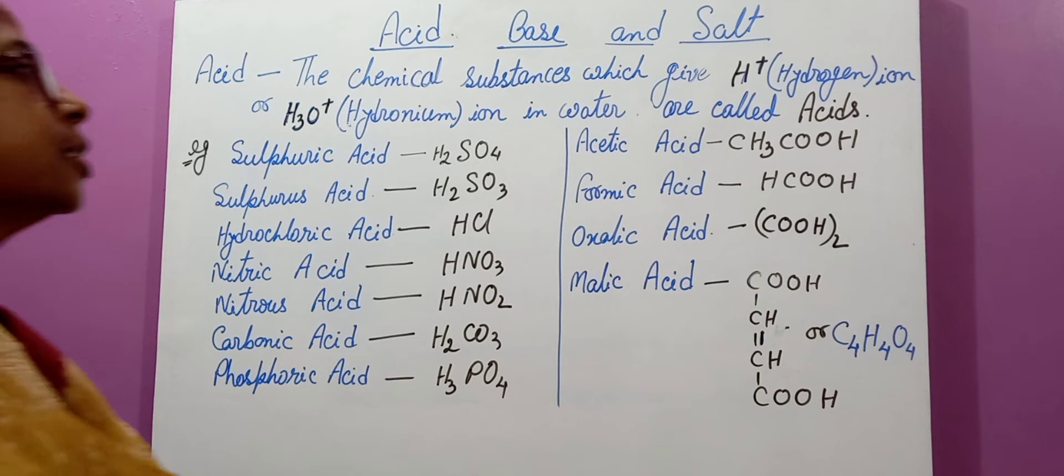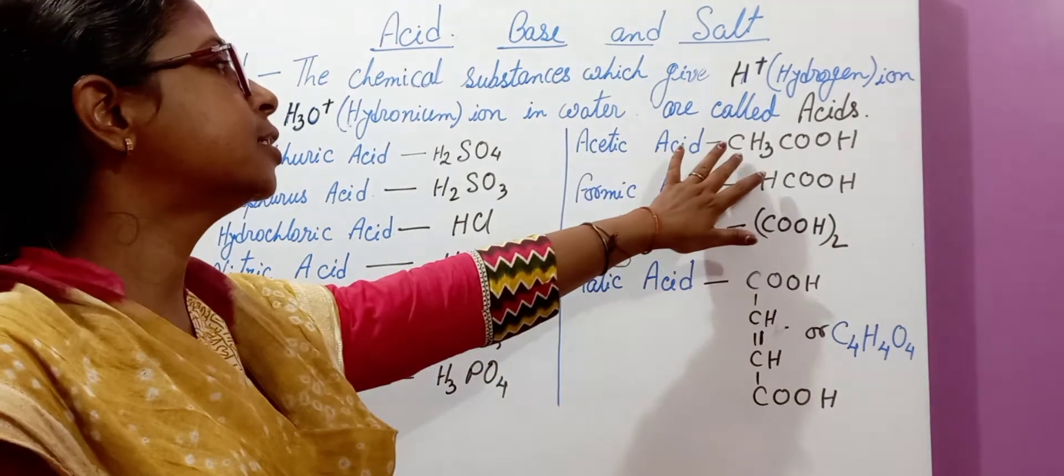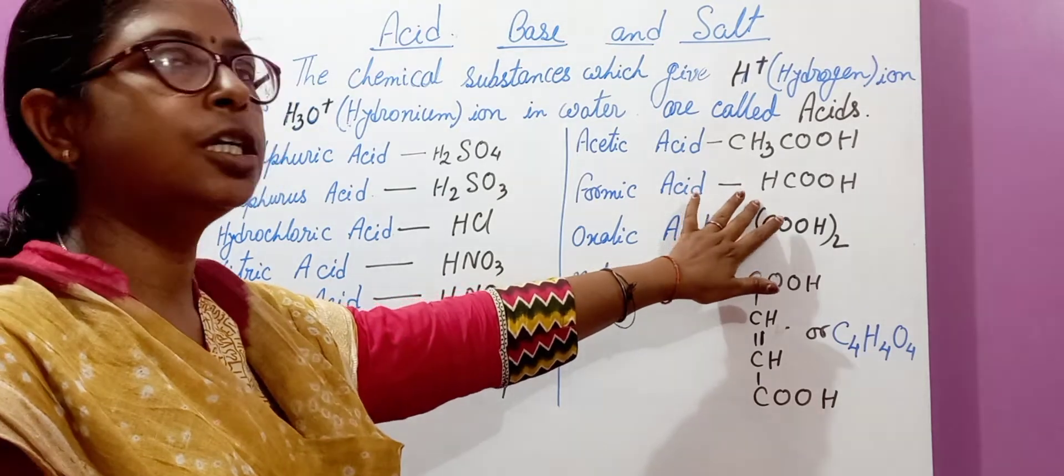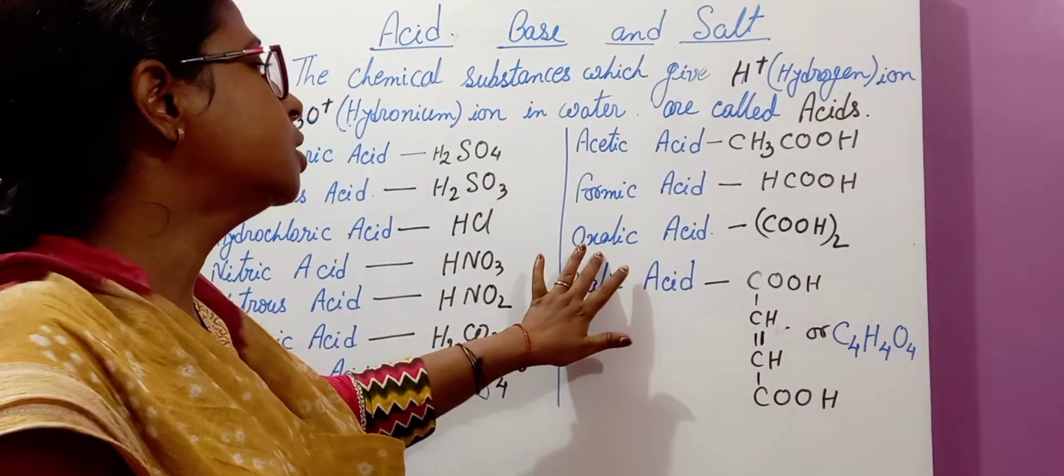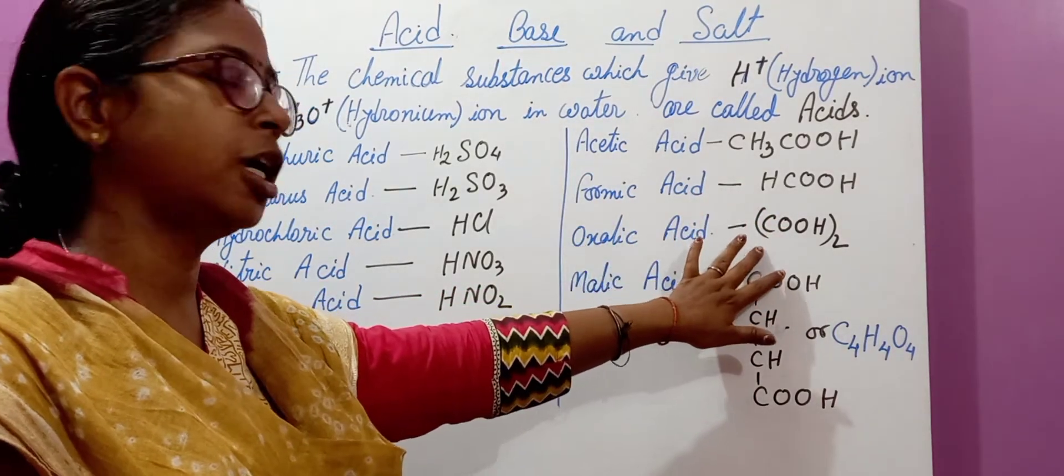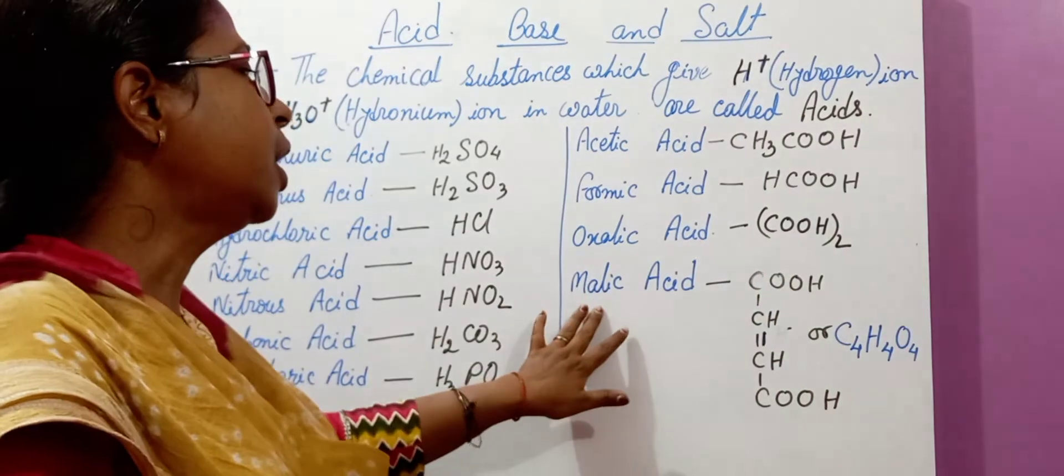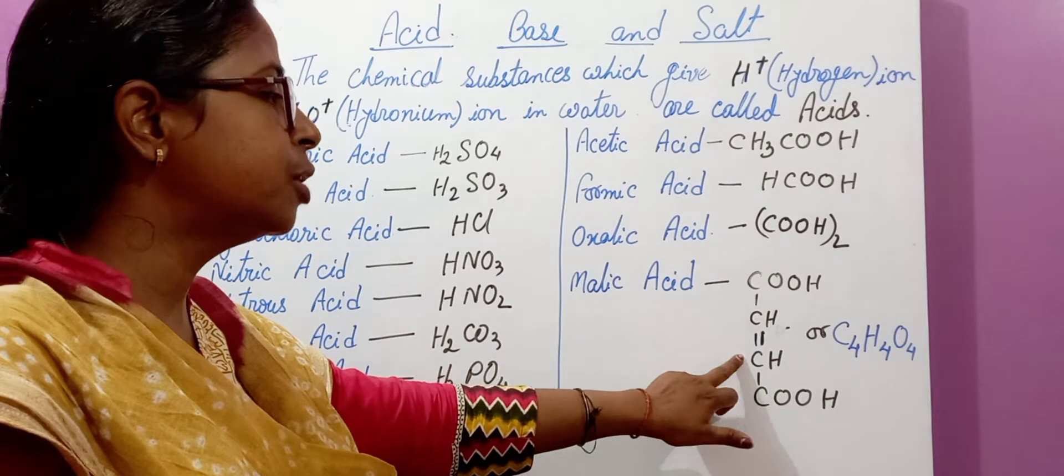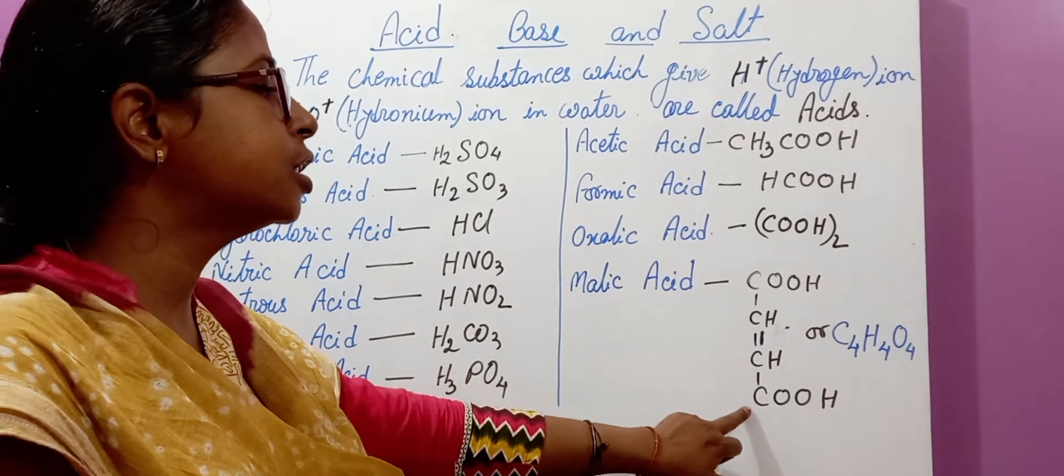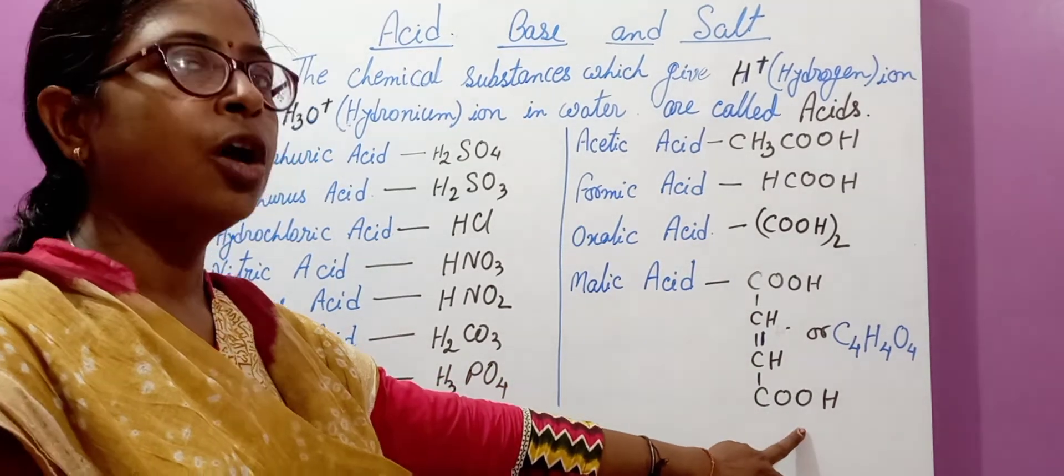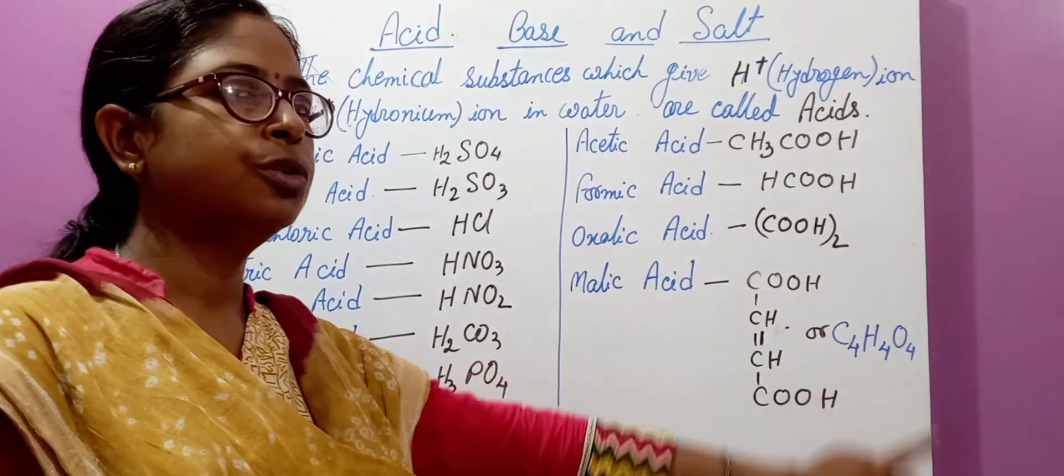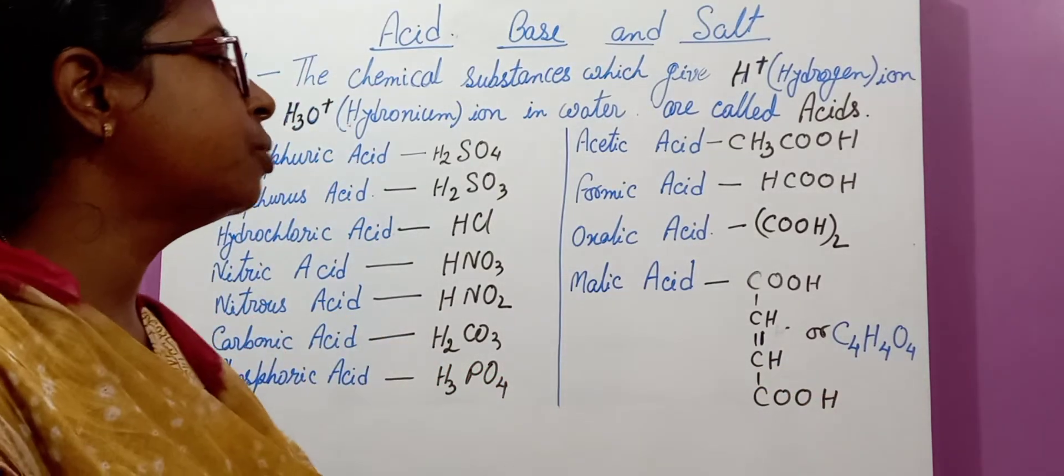Other acids are like acetic acid like CH3COOH. Formic acid like HCOOH. Oxalic acid like COOH twice. Like maleic acid like COOH-CH=CH-COOH, or combined you can say C4H4O4. This is the formula of maleic acid.